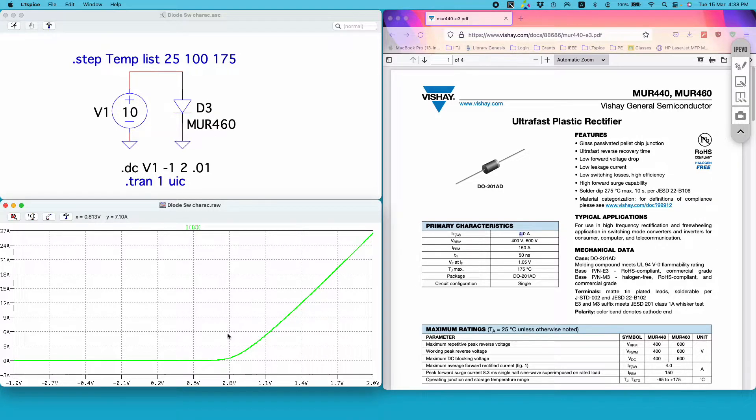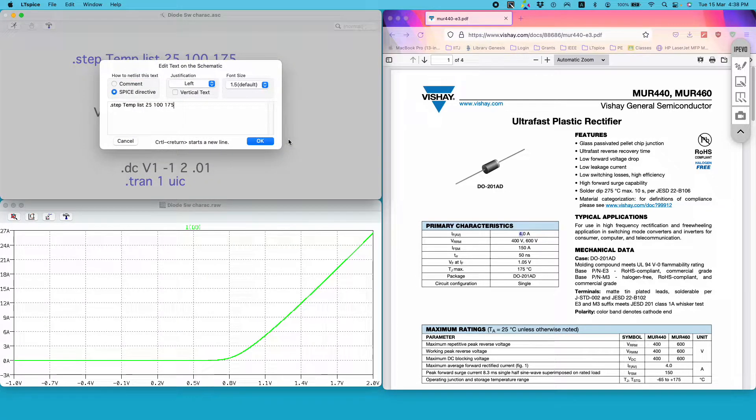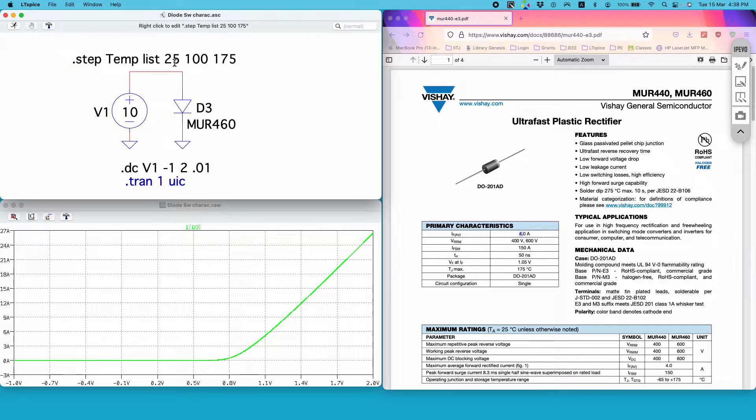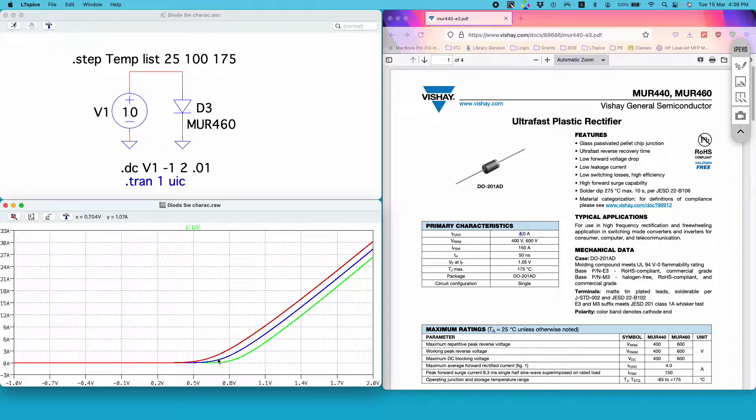Another thing which affects this plot is the junction temperature of the diode. Here I am performing a temperature sweep, plotting this same curve for three different temperatures: 25 degrees Celsius, 100 degrees Celsius, and 175 degrees Celsius.